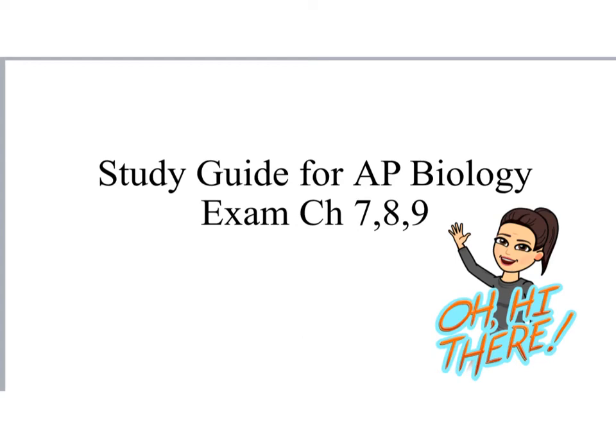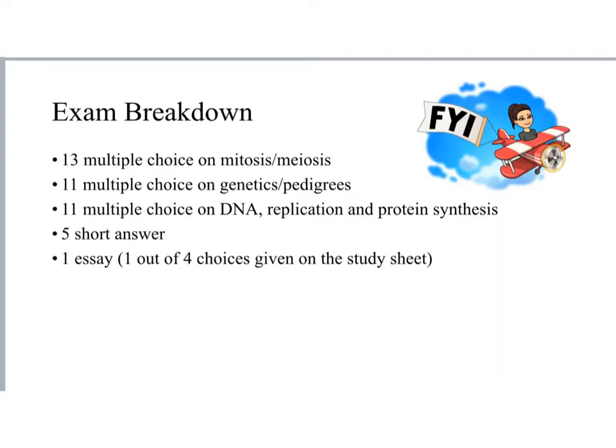Here is your study guide for AP Bio. The exam covers chapters 7, 8, and 9. For chapter 7, mitosis and meiosis, there are 13 multiple choice questions. For genetics, chapter 8, and pedigrees, there are 11 multiple choice. For DNA, replication, and protein synthesis, there are also 11 multiple choice. There are five short answers and one essay, for which you were given four choices.